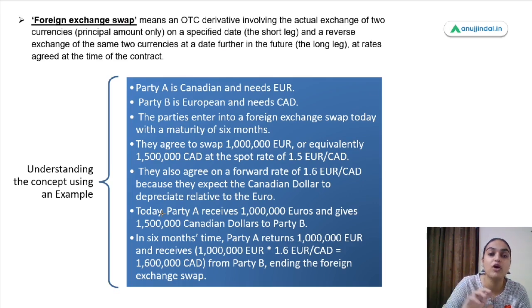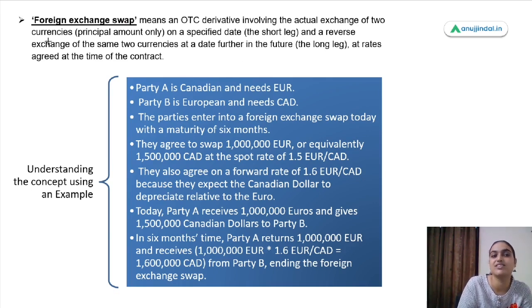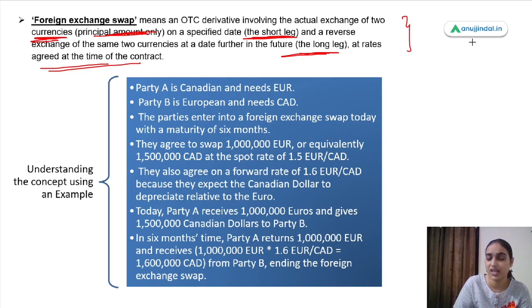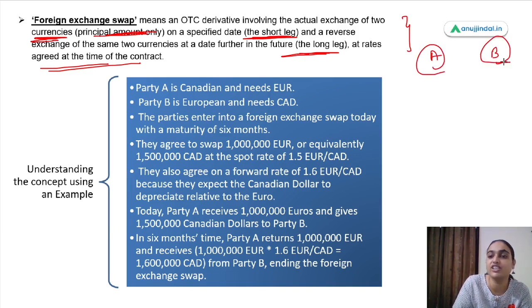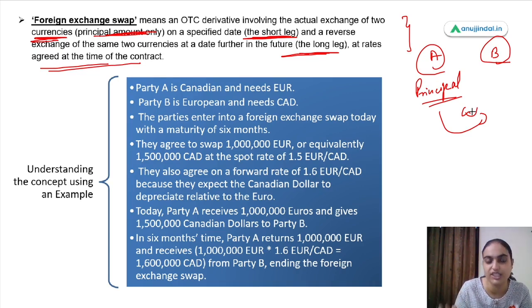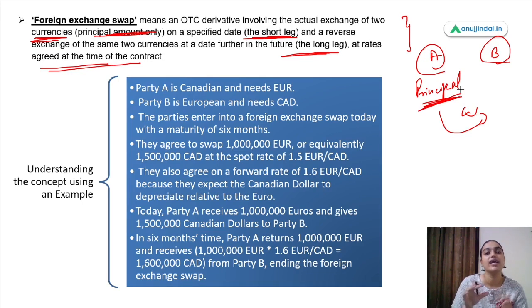Moving to the foreign exchange swap. A foreign exchange swap is a derivative which involves the actual exchange of two currencies — principal amount only — on a specified date in the short leg, and a reverse exchange of the same currencies in the future on the long leg, at a rate agreed at the time of the contract. Suppose there are two parties: Party A, a Canadian company that needs euros, and Party B, a European company that needs Canadian dollars.